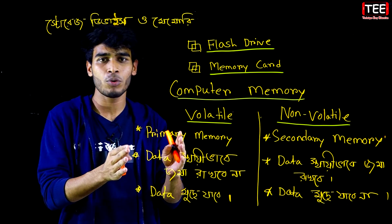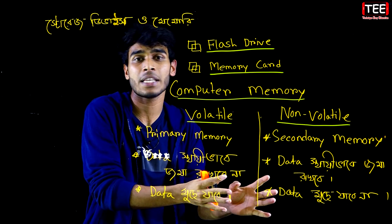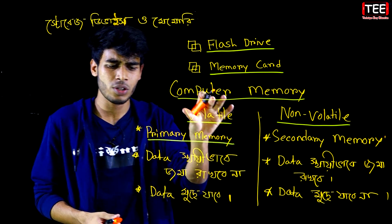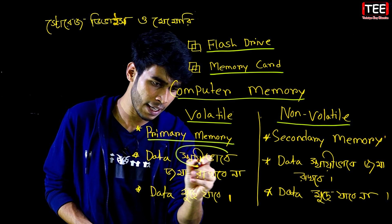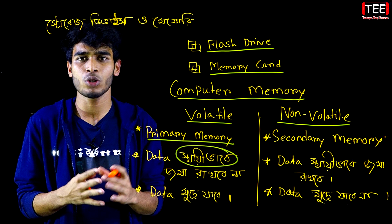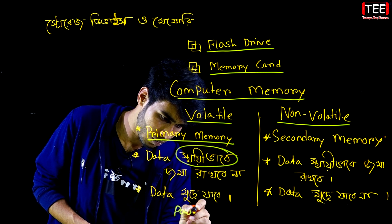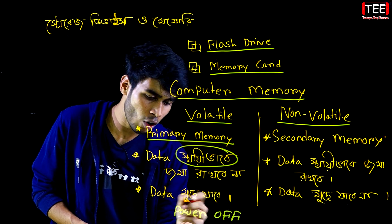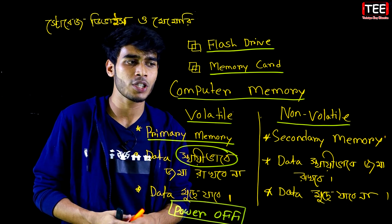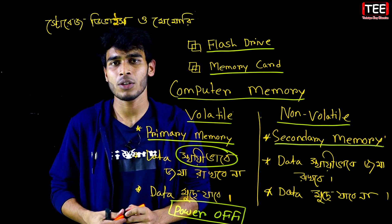If you have the computer, which is the non-volatile memory — one day memory was always available. After that we will see: if you are going to power off, then you will be off. Power off is primary memory, and secondary memory.